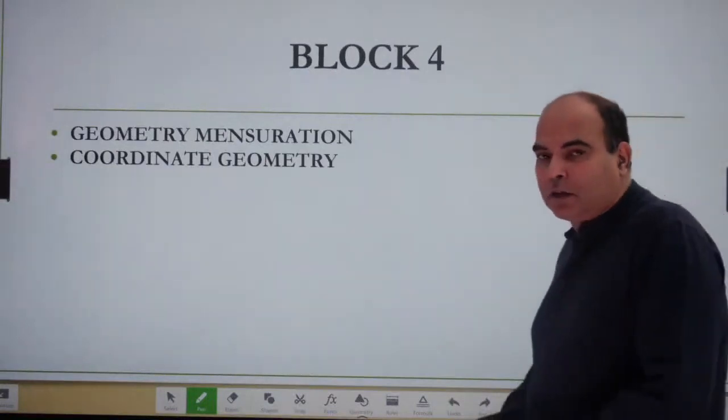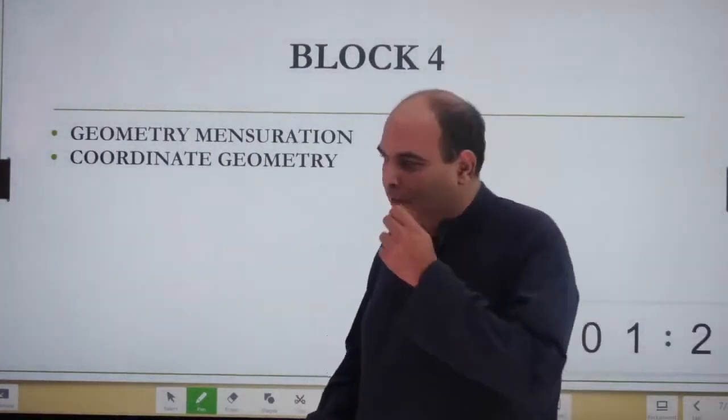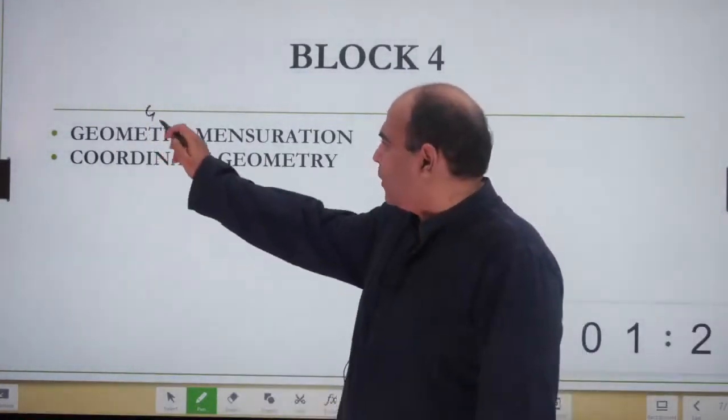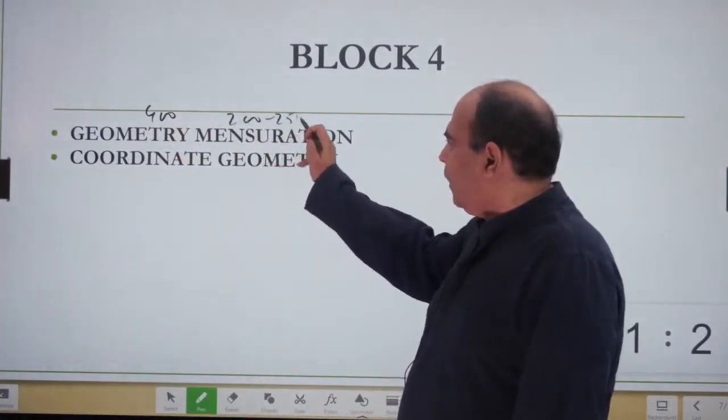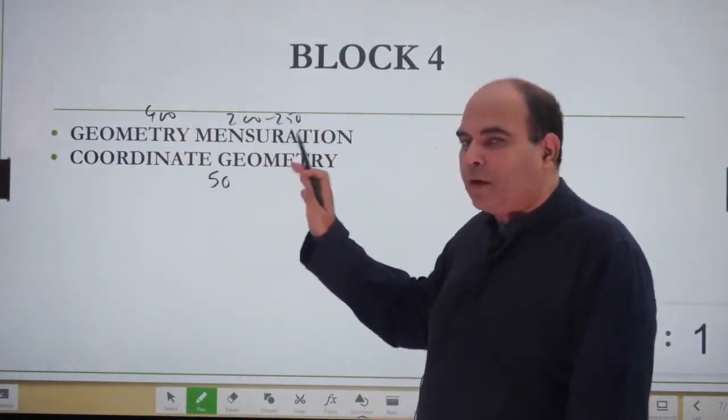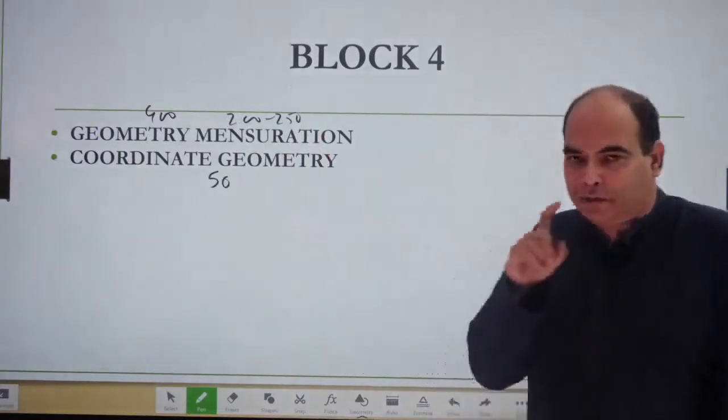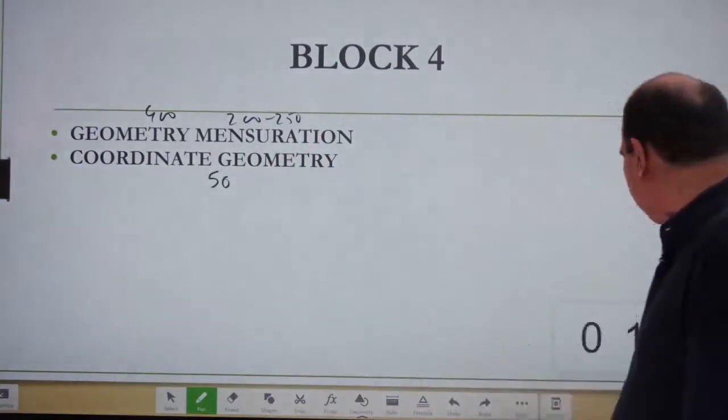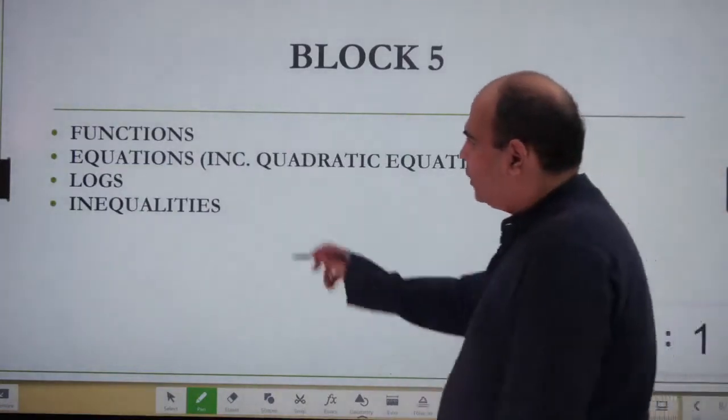Geometry is a 400-question chapter. Mensuration is 200-250. Coordinate geometry, even if you self-solve only 50 questions, that's enough—do the theory and self-solve 50 questions on that topic.